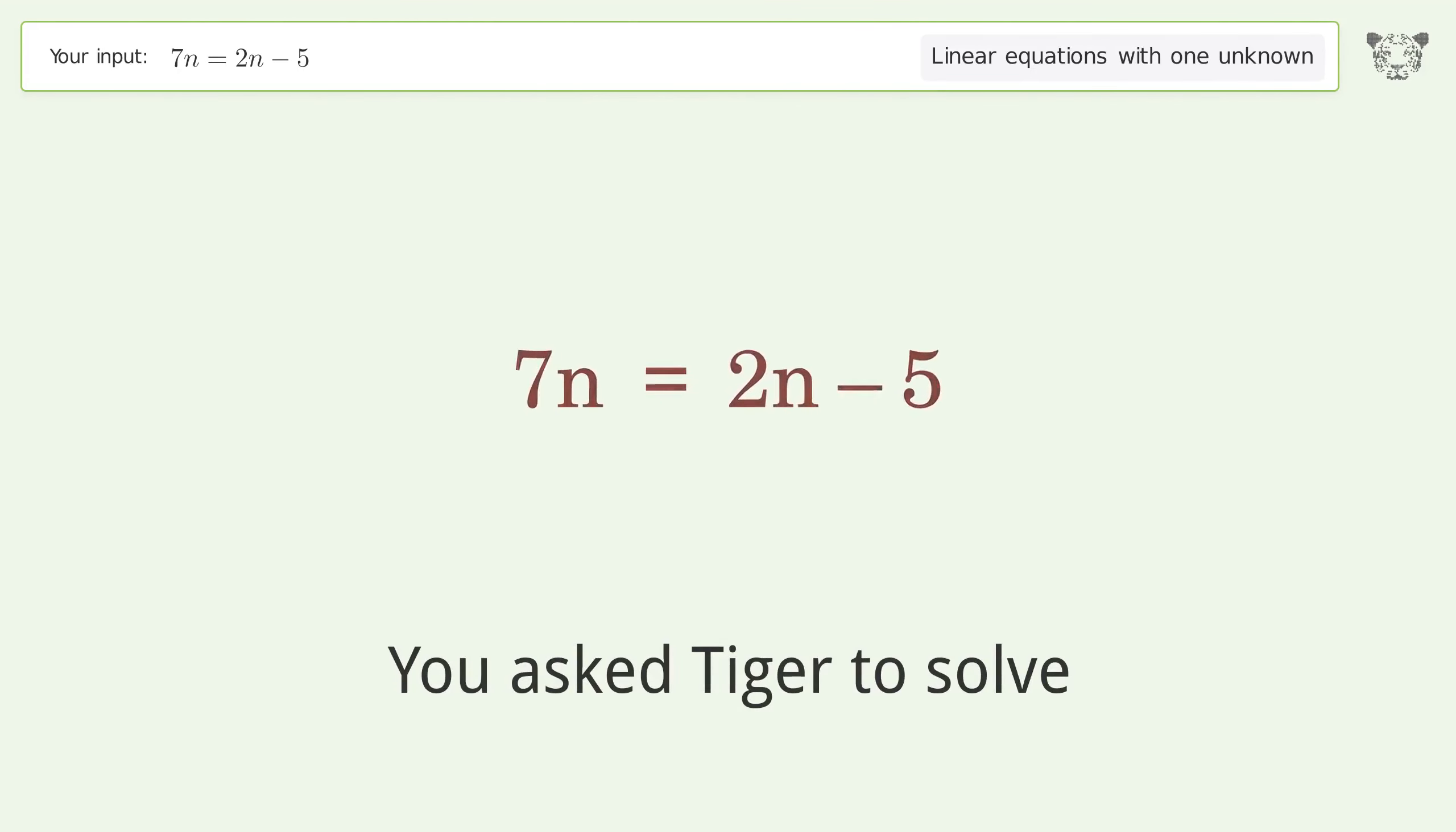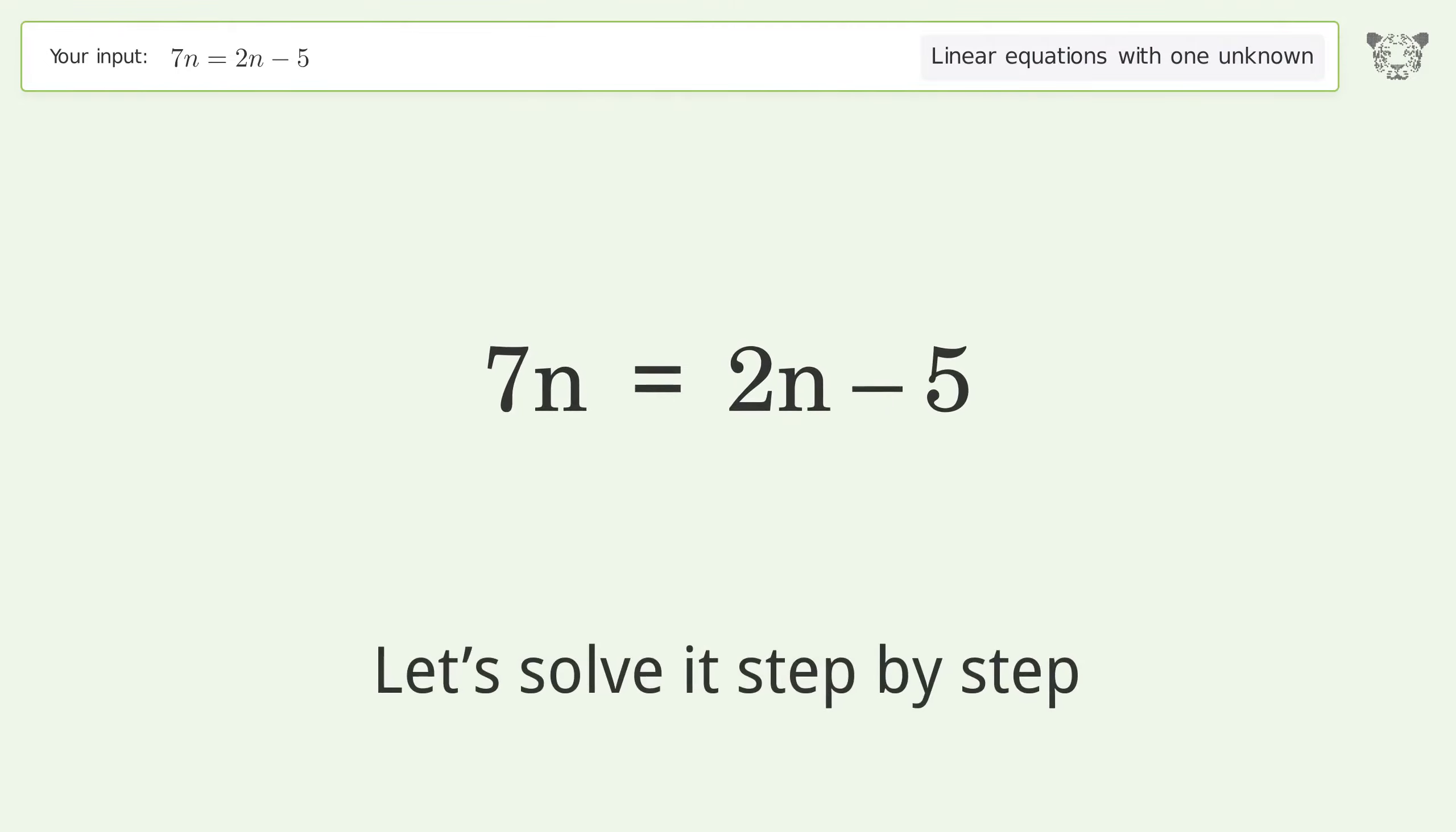You asked Tiger to solve. This deals with linear equations with one unknown. The final result is n equals negative 1. Let's solve it step by step.